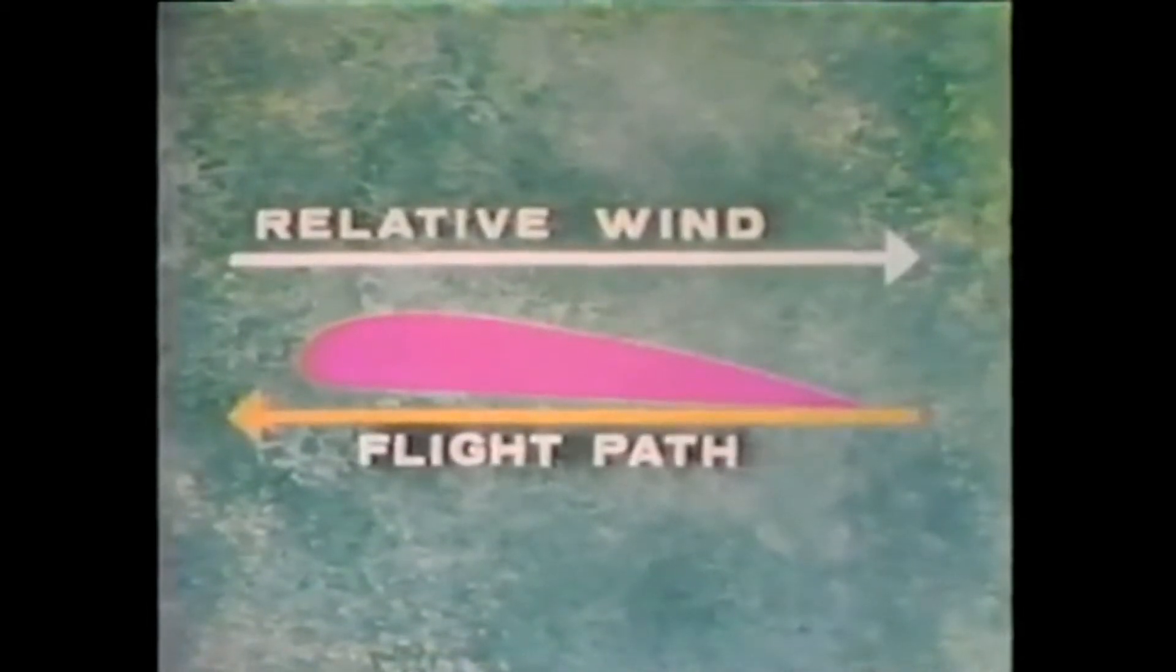The airflow striking the fixed wing airfoil of an aircraft, or the aircraft itself, is called the relative wind. The direction of the relative wind is always opposite to and parallel with the flight path of the airplane. In level flight, therefore, the relative wind and the flight path are horizontal and parallel.